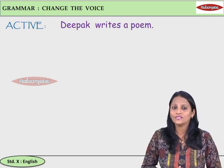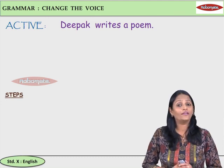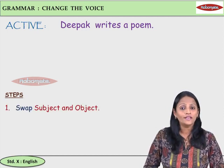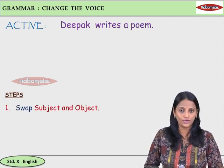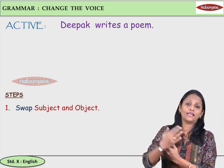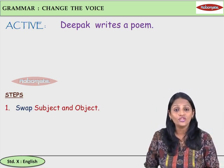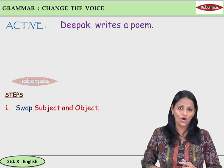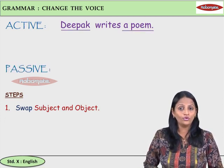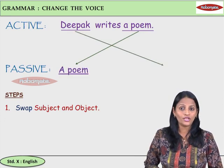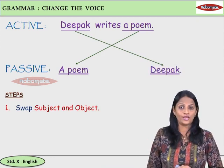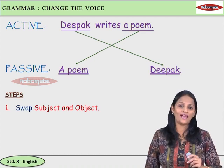Once again students, which is the subject here? Yes, it is Deepak. And which is the object? Poem. Now let us look at the steps. First and foremost: swap subject and object. Swap means interchange. You are going to interchange the position of subject and object. So, poem will come in subject position, and Deepak will go in object position. That is the first step: swap subject and object.